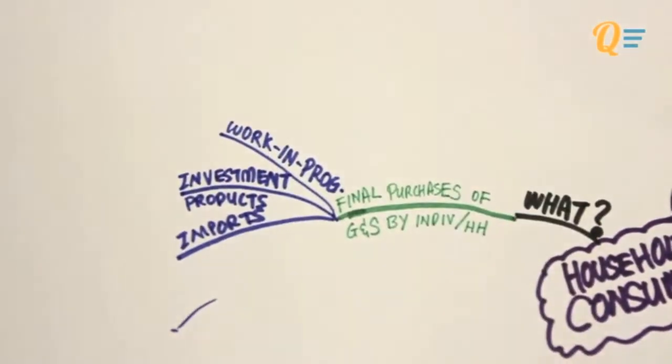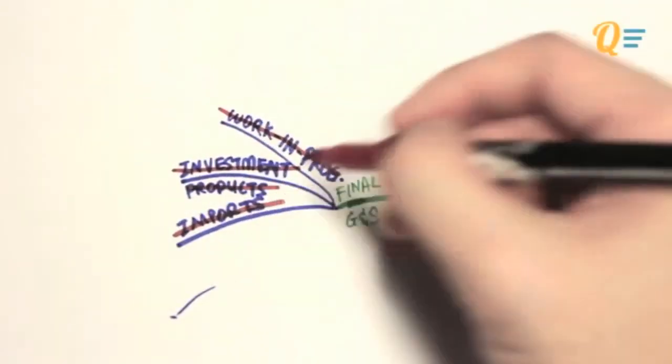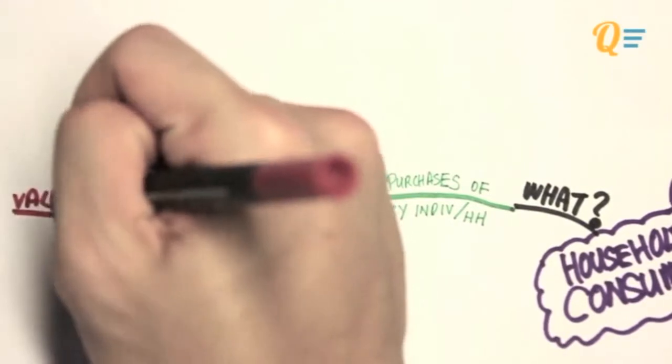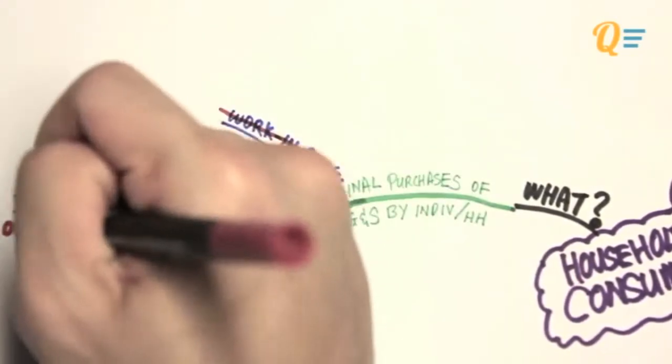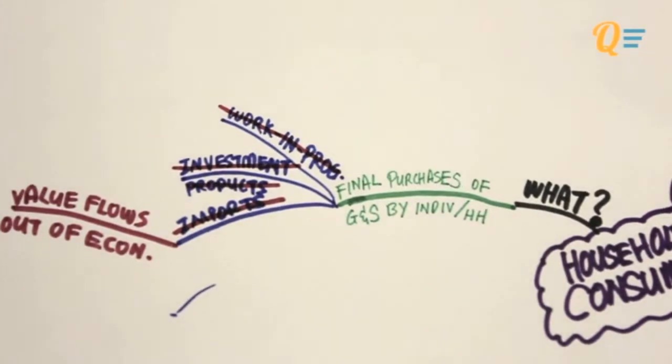Now, the reason why imports are not included is because it is actually value flowing out of the economy. We know that aggregate expenditure equals to income and equilibrium. So while imports are flowing out of the economy, it doesn't become income to us. Therefore, imports is not part of consumption.